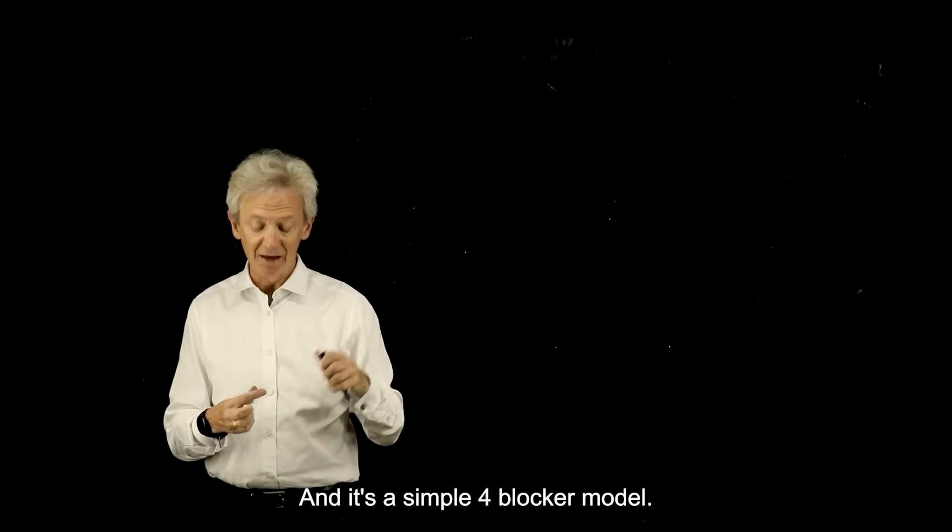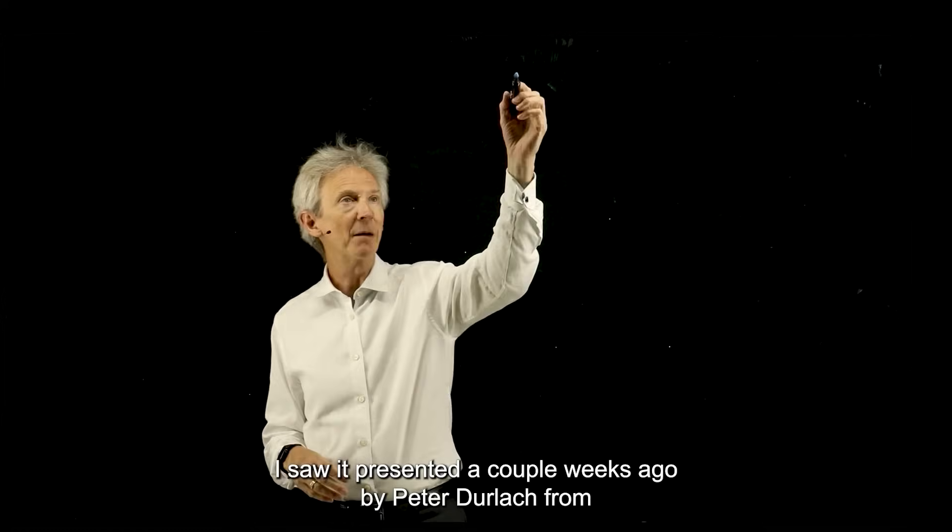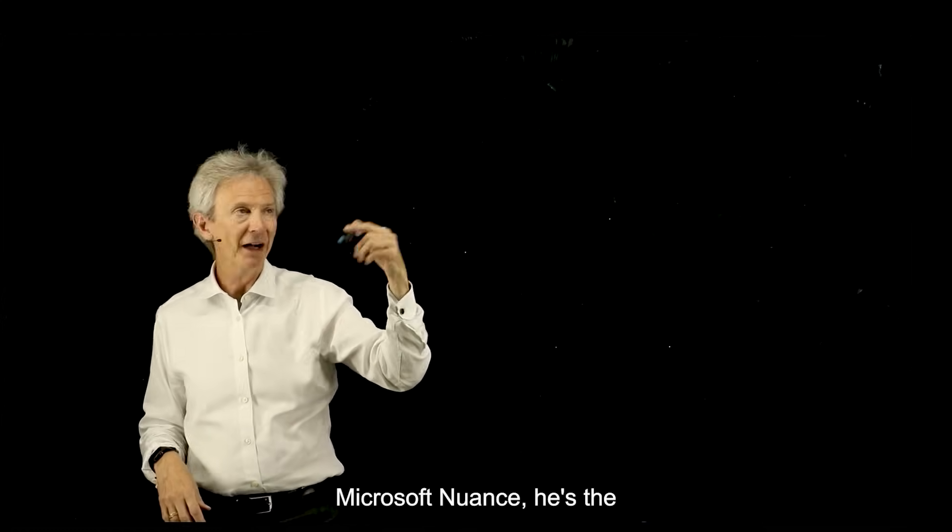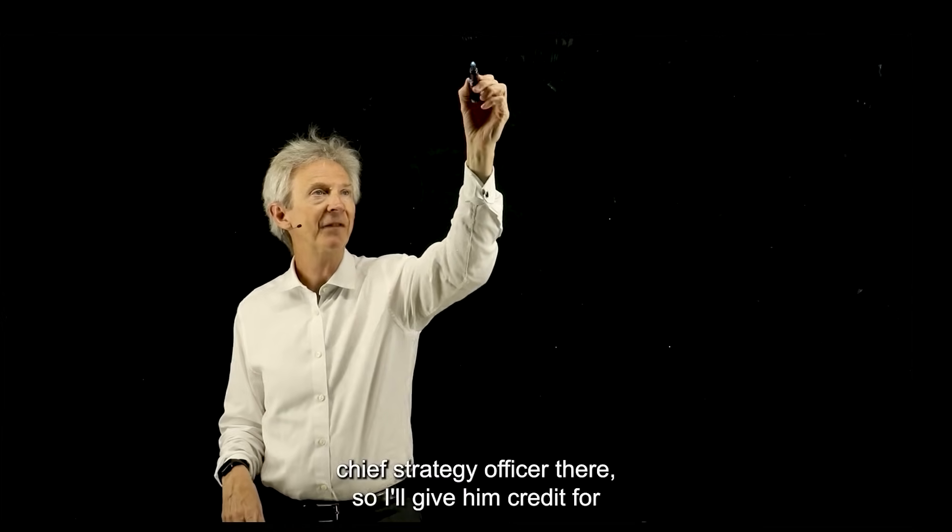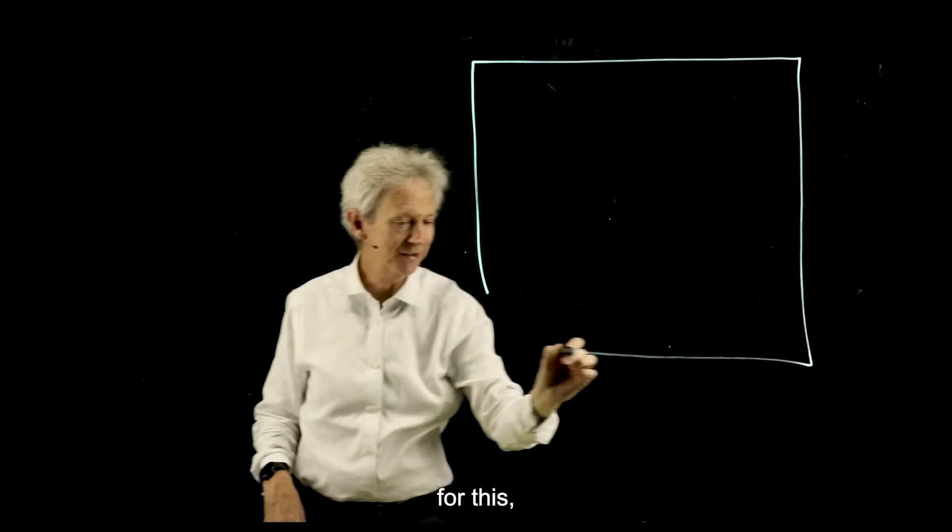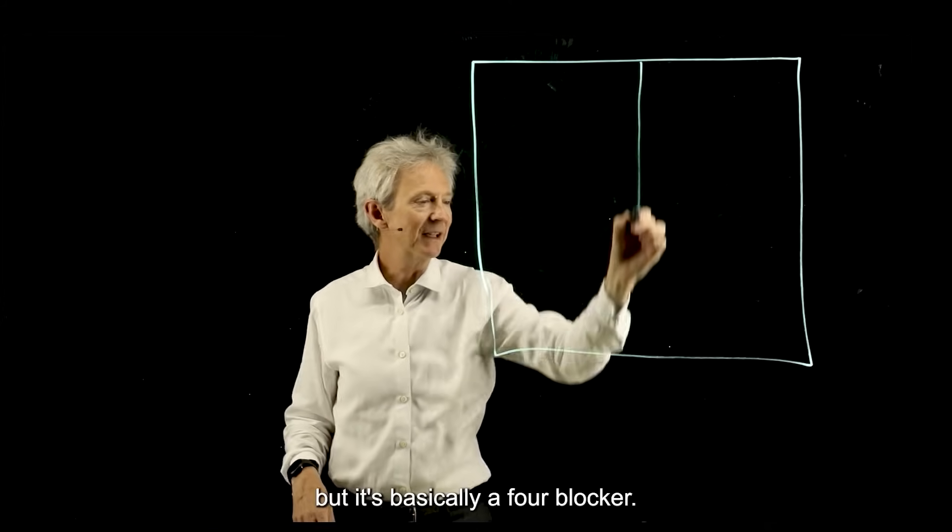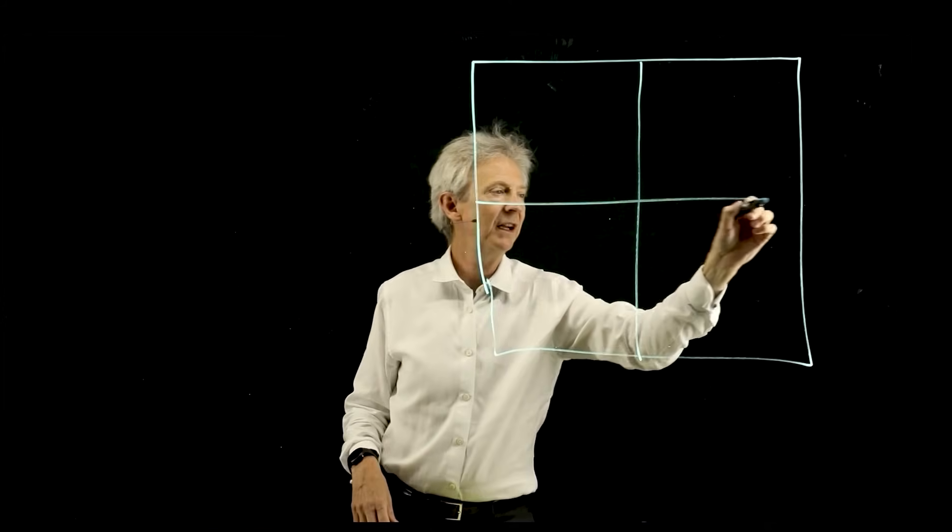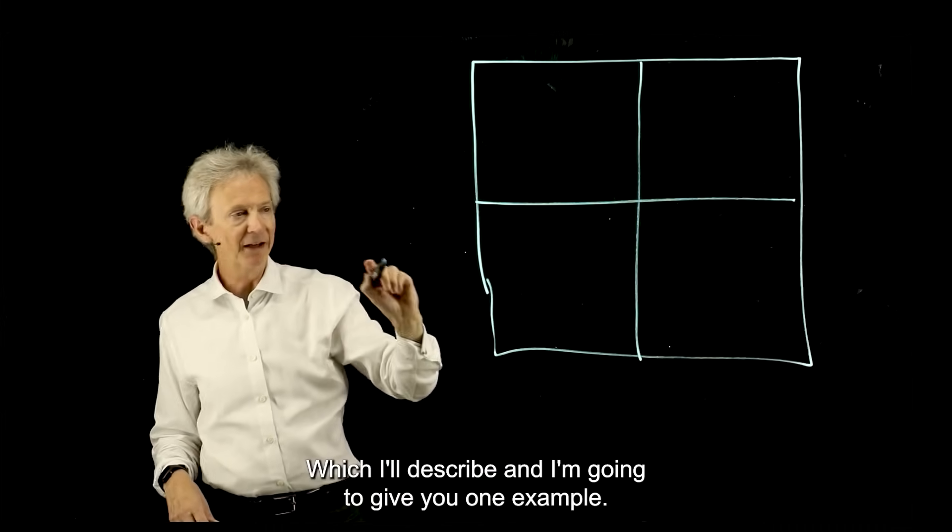It's a simple four-blocker model. I saw it presented a couple weeks ago by Peter Durlach from Microsoft Nuance. He's the chief strategy officer there, so I'll give him credit for this. It's basically a four-blocker which I'll describe and I'm going to give you one example.